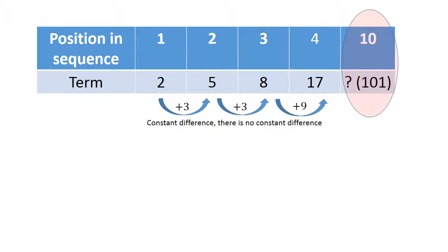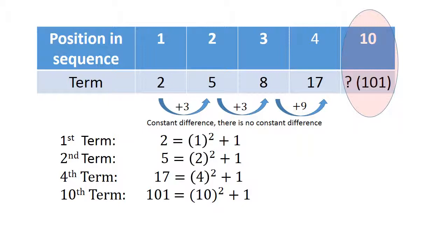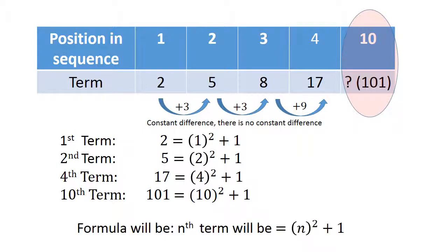Here we have a table with position 1, 2, 3, 4 and terms 2, 5, 8, 17. If we look at the constant difference, there is no constant difference. First term: 2 equals 1 to the power of 2 plus 1. Second term: 5 equals 2 to the power of 2 plus 1. Fourth term: 17 equals 4 to the power of 2 plus 1. The tenth term is 101 equals 10 to the power of 2 plus 1. Our formula will be: nth term equals n to the power of 2 plus 1.